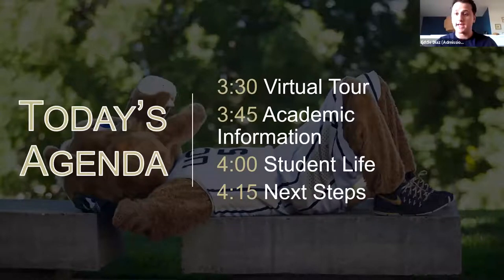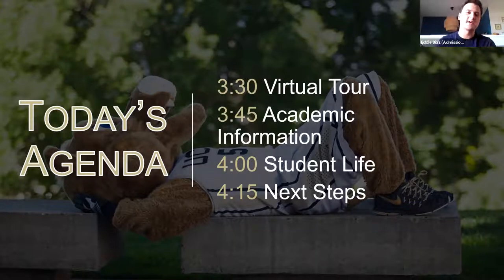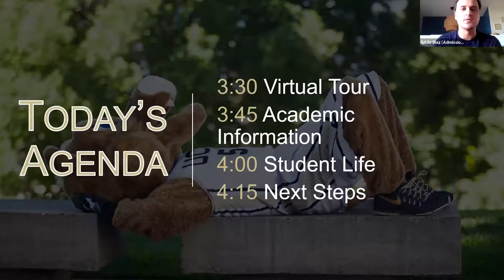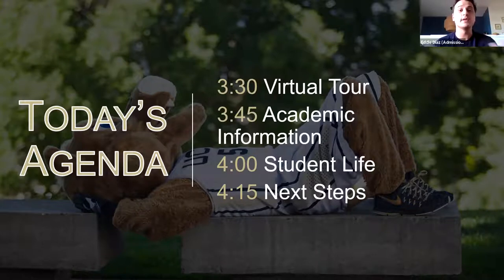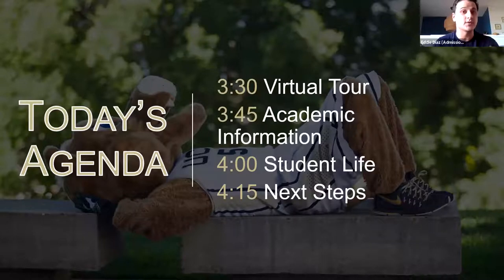Before we get into all of that, I want to give you a brief insight into UCCS. UCCS, the University of Colorado Colorado Springs, is located in Colorado Springs — Olympic City, USA. We're just an hour south of Denver, really close to the capital of Colorado, and really close to the great outdoors. You can make a day trip to the mountains, but there's plenty to do right here in the Springs, and we have some of the best views in the country.